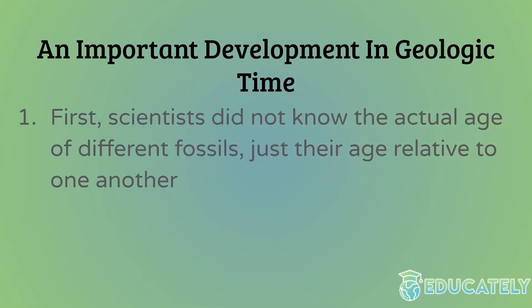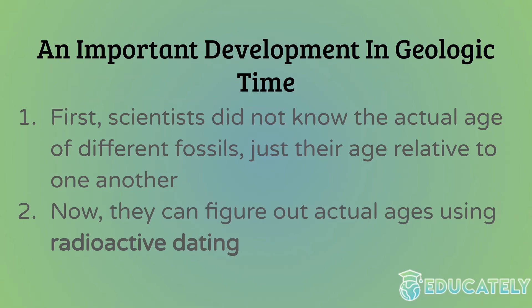An important development in geologic time: at first scientists didn't know the actual age of different fossils. They couldn't look at a fossil and say 'this one's 300 million years old.' They just knew their ages relative to one another — they could tell if one fossil was younger than another based on the depth at which it was found or the type of rock. But now they can actually get a rough estimate of when certain life forms were around using radioactive dating. They test the presence of certain elements in a fossil or sample, and based on that, they can get a rough inference of how old it is.